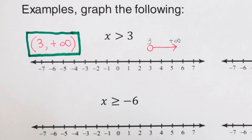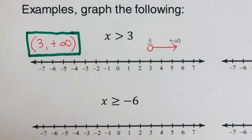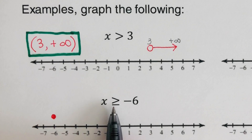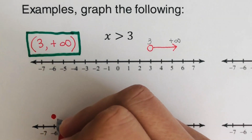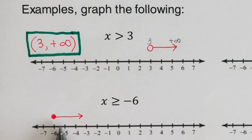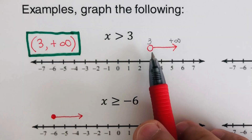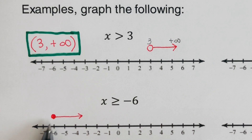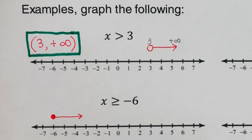Next example: x is greater than or equal to negative 6. Since there's a bar underneath, we use a closed circle on negative 6. The arrowhead is directed to the right, so we draw a line going to the right. A closed circle means that negative 6 is included as a solution, unlike the open circle in the previous example where 3 was not included.